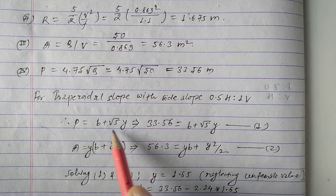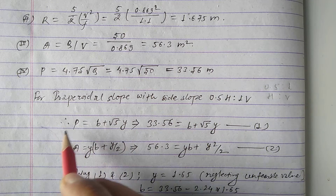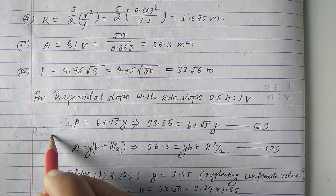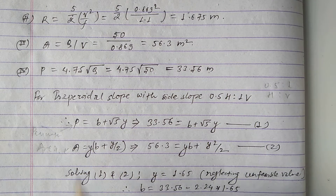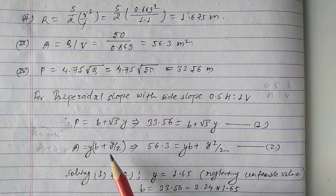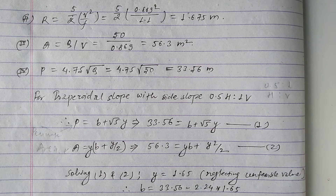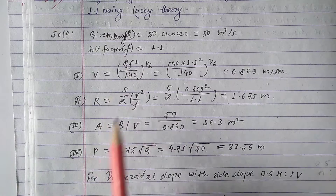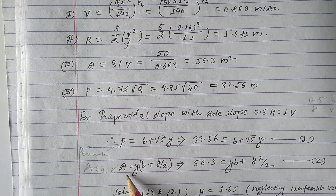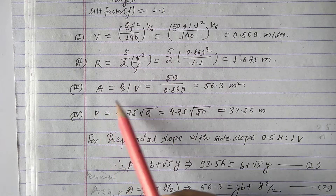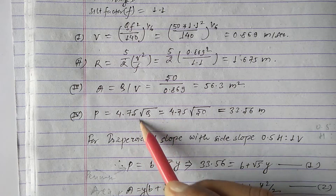We have two basic formulas: the wetted perimeter P = B + 2√(1.25)·y, and the area A = y·(B + y/2). These two equations are very important and are repeatedly used for determining different parameters. To find P and A, we first need to find V and R, because A = Q/V and P = 4.75·Q^(1/2).